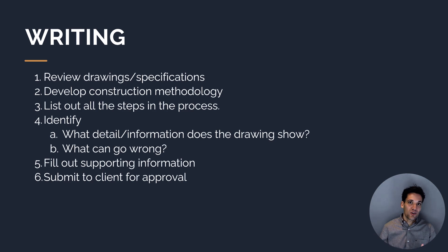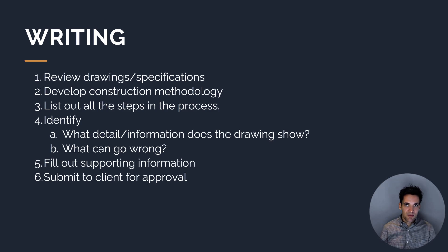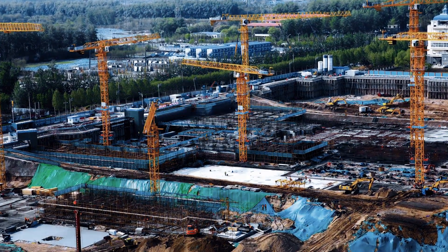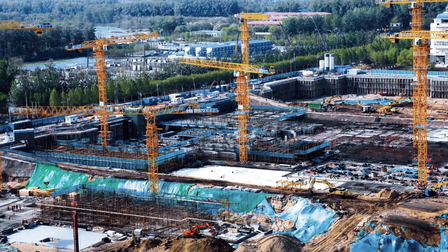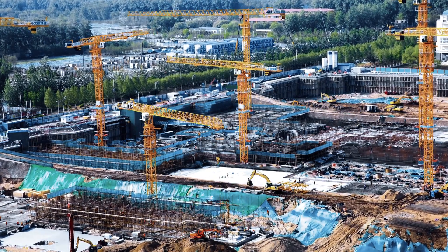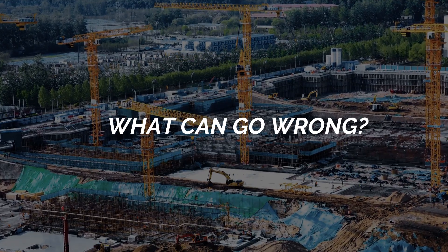Identify which detail and information the drawings show for each of these steps, and understand what can go wrong. If you understand what can go wrong, you understand what needs to be checked to ensure it's done correctly. Then fill out all the relevant supporting information — the relevant drawings and specifications, the frequency — and then submit it to the client for approval and get them to provide feedback and comments. When preparing an inspection and test plan, what you really want to document are the checks around the things that can go wrong — that's the ultimate goal.